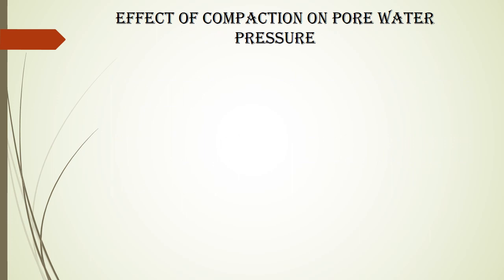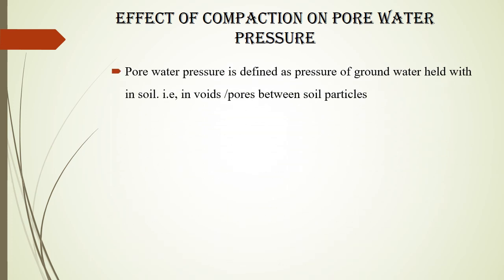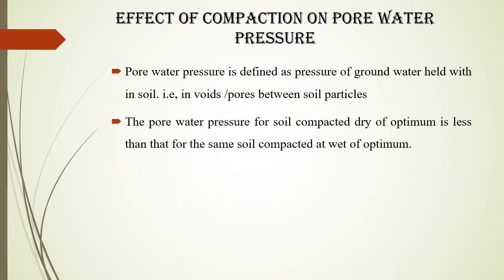Next is the effect of compaction on pore water pressure. Pore water pressure is defined as the pressure of the groundwater held within the soil, that is the groundwater held in voids or pores between the soil particles. The pore water pressure for soil compacted dry of optimum is less than for the same soil compacted at wet of optimum.